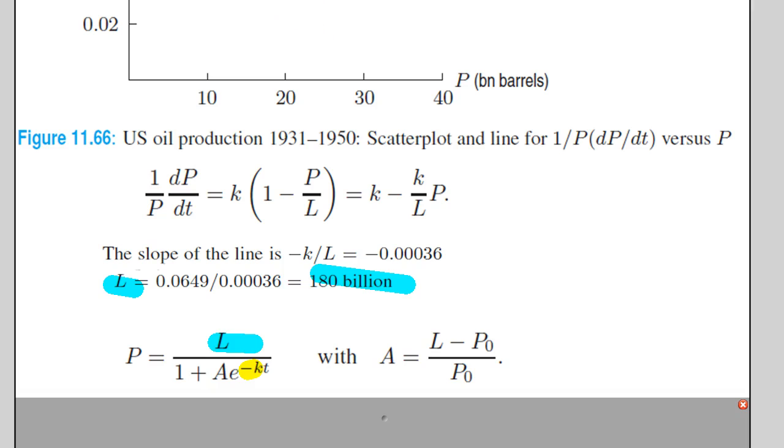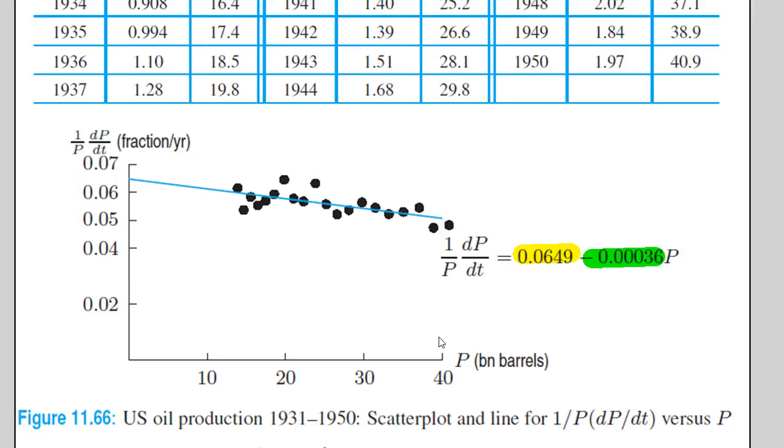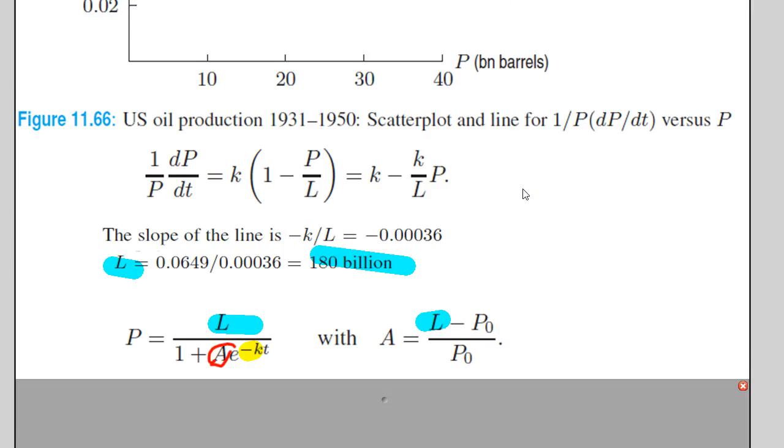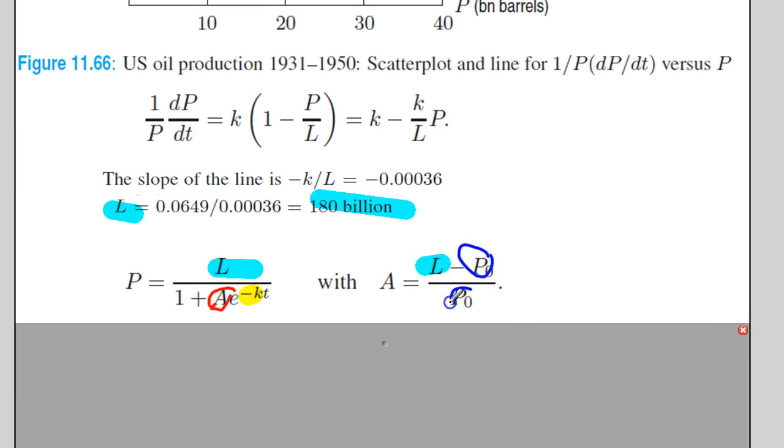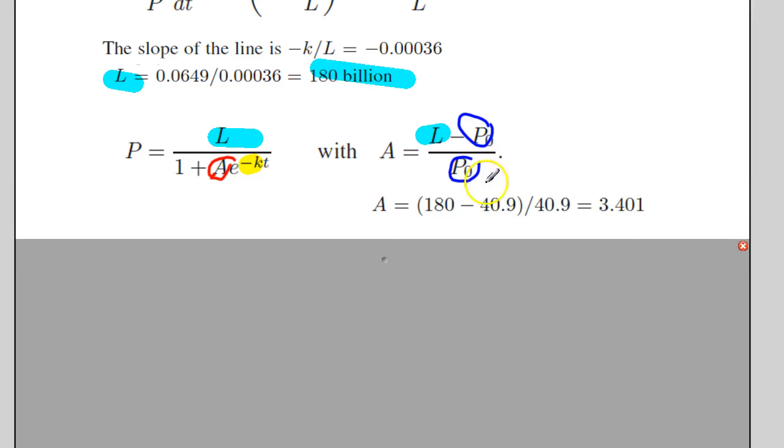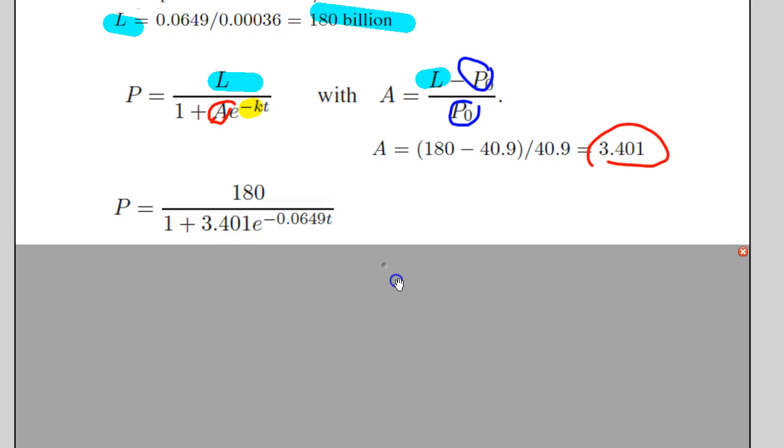Now all we have left to figure out is what is our A. If you recall, one of the things I encourage you to memorize was how to determine A. It's the ratio between the difference between our limiting value L and our initial value P naught. What initial value did he use? He used the fact that this was in the 1950s, so he used the value of the production of oil in the year 1950, which was 40.9. So he ended up with an A value of 3.3401.